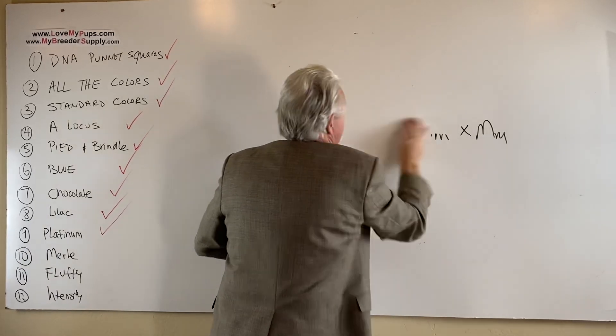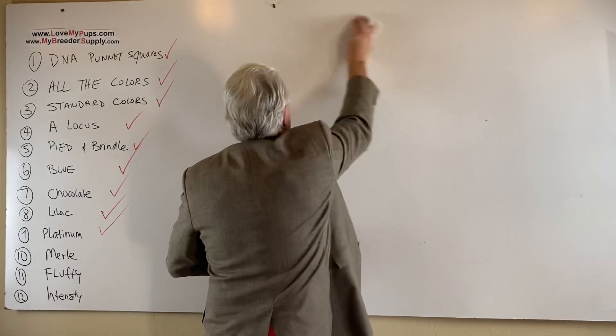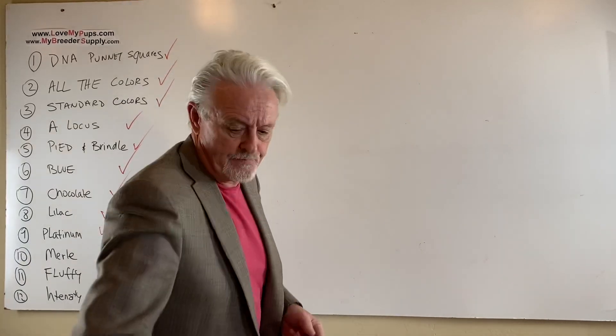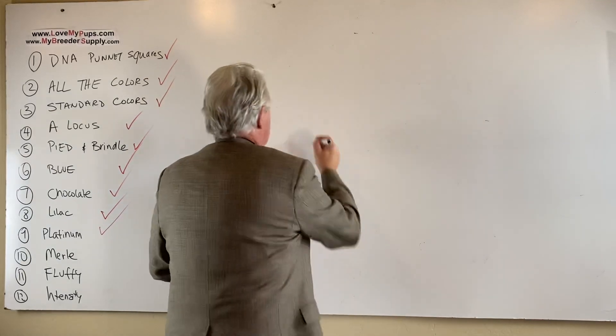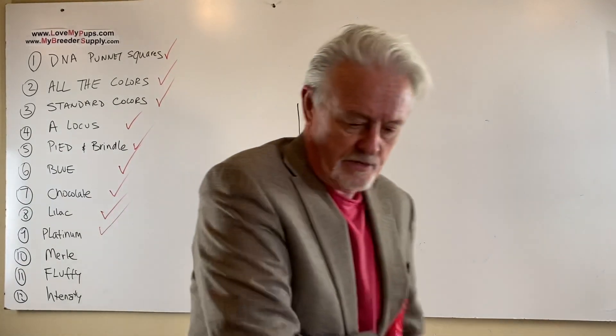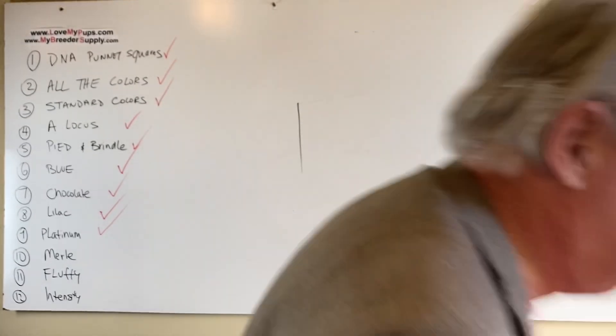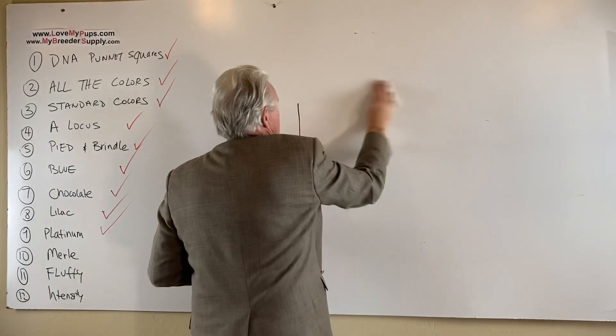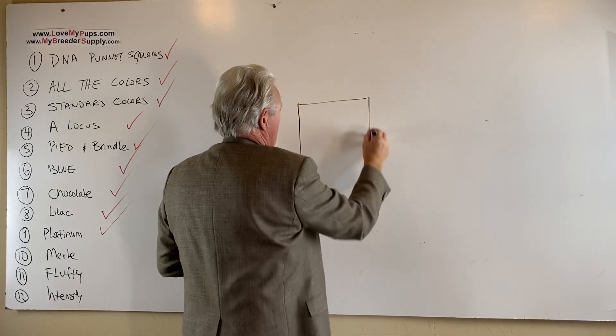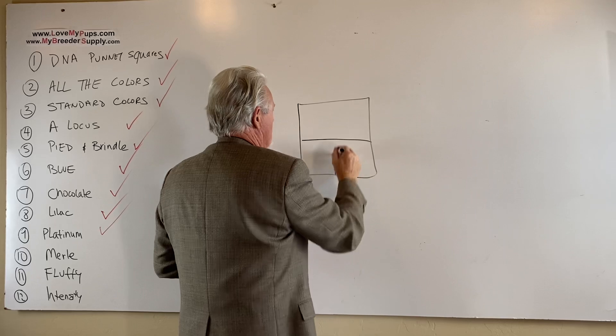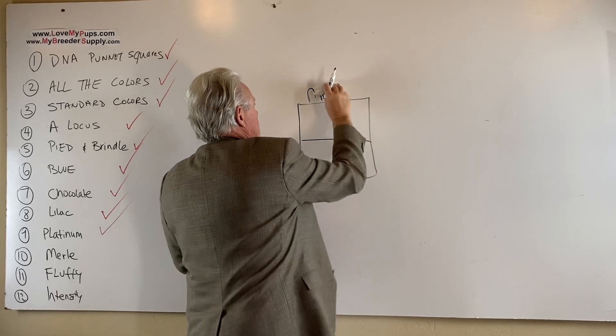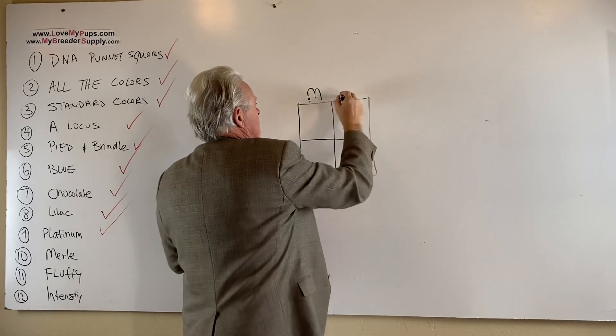So if you put a Merle with a Merle, what do you get? So here's our Punnett Square. And I need to wipe that down a bit more. Let me just get another rag here. Get that dry so you can see it. Punnett Square. Merle. Merle to Merle. What do you get?